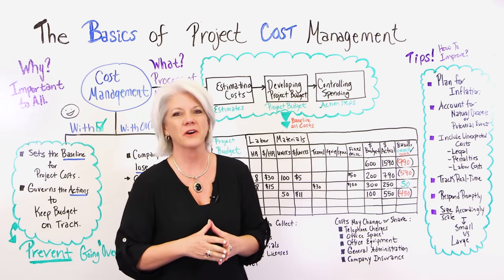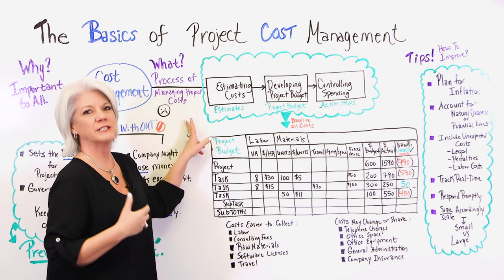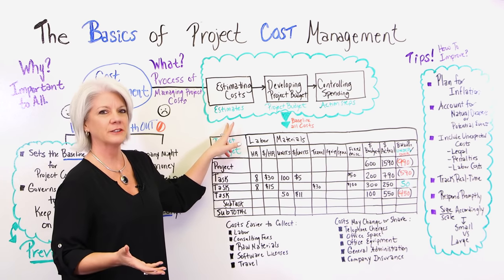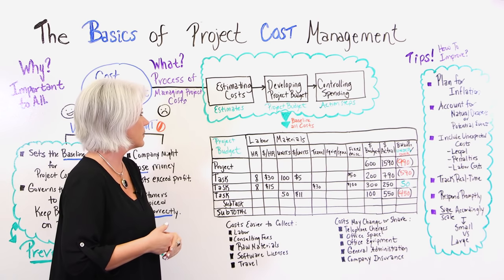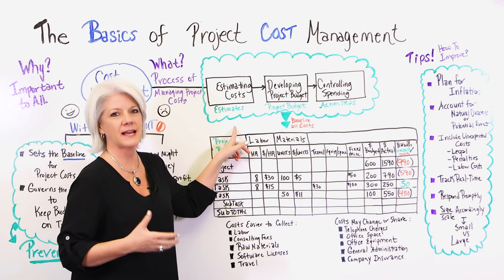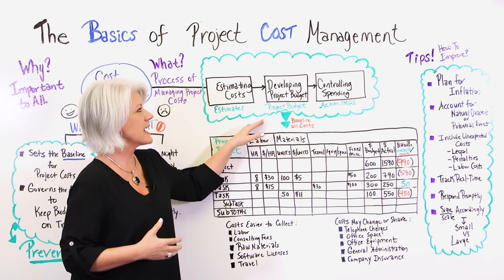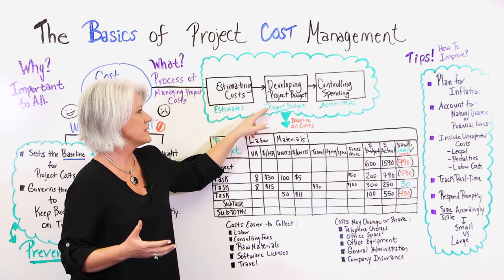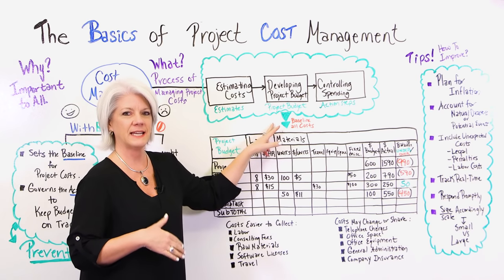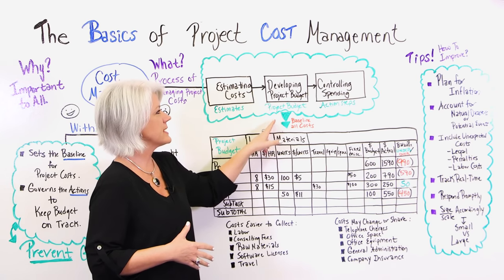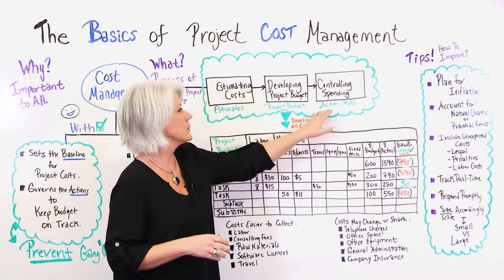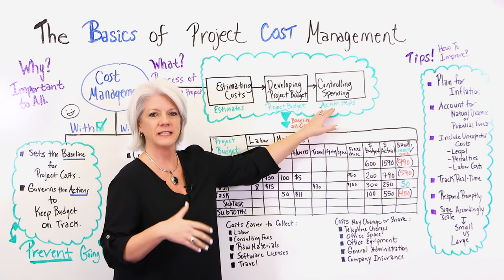So let's look at what cost management really is. Cost management is a process for managing the cost of your project and it includes estimating your cost — all the costs on your project — so that you get a detailed list of all the estimates at a task level. Then you take that and you develop your project budget, which you baseline at the task level. And you take that and it's used to control the spending for your project, so you ultimately have a set of action steps you take to keep on track.